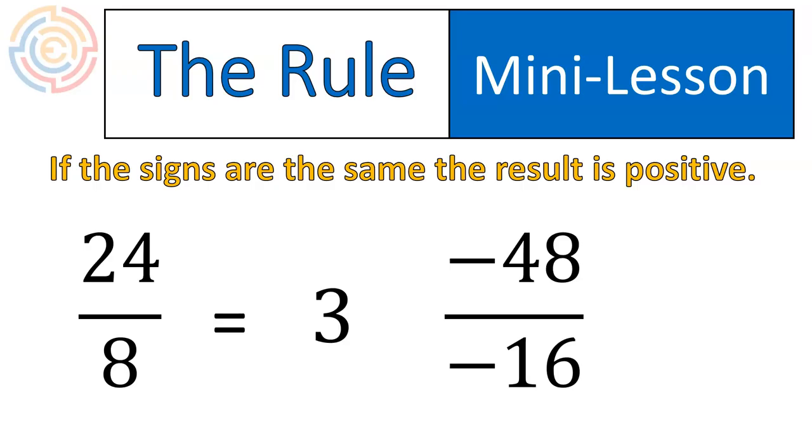Now, if you have a negative divided by a negative, the result will be positive. The signs are the same. 48 divided by 16 gives me 3. No surprise there. But the sign is what we're focused on. There's a negative divided by a negative. Therefore, we get a positive result.